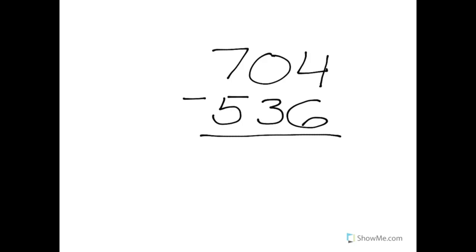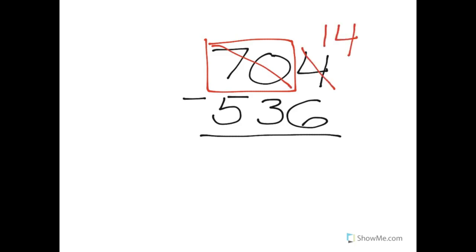Okay, here's one more for you to try. You're going to pause the video in just a moment, solve it, and then come back, and we'll walk through it together. 704 minus 536. Okay, welcome back. Let's see what we got here. We got 704 minus 536. If we have four in the ones place, can we give away six? We cannot, so we need to regroup. We're going to look over — oh, there's a zero in the tens place, so of course we're going to box. We're now going to have 70 tens to regroup. The four becomes a 14. The 70 becomes a 69, and we're going to subtract. 14 take away six is eight. Nine take away three is six. Six take away five is one. Our difference here is 168.